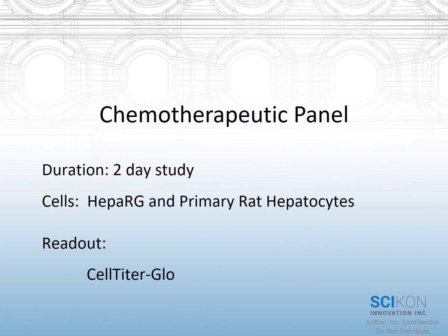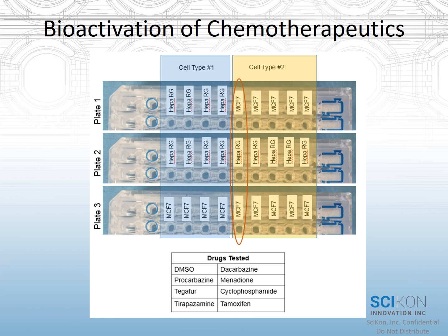The last dataset is the chemotherapeutic study, working with HepA-RG cells in a two-day study with CellTiter-Glo as the readout. There are three different plates: an experimental plate with upstream liver or HepA-RG cells followed by downstream MCF-7 or human breast cancer cells; control plate two with just HepA-RG cells; and control plate three with just MCF-7 or breast cancer cells. Shown at the bottom is the panel of all drugs plus DMSO control. All of the CellTiter-Glo ATP data was measured in one specific circled column across all three SciFlow plates.